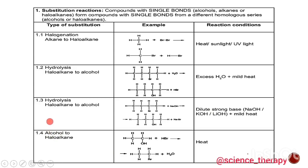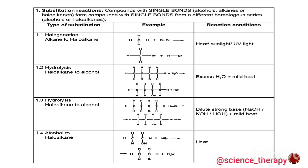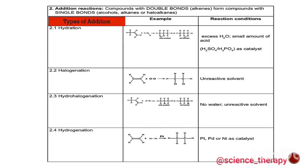The last type of substitution reaction is halogenation, but this time we are taking an alcohol and turning it into a haloalkane. We have ethanol and we react it with hydrogen bromide. The OH is substituted by the bromine atom, and this OH reacts with the remaining hydrogen to give us the inorganic byproduct water H₂O. The reaction condition is heat.